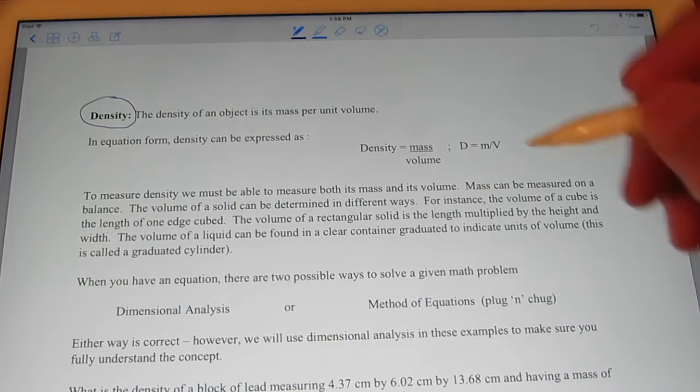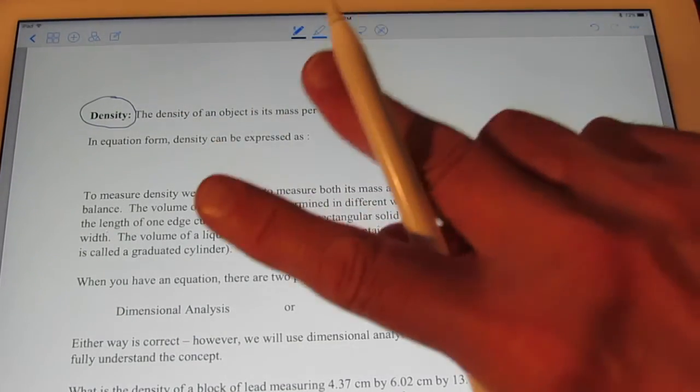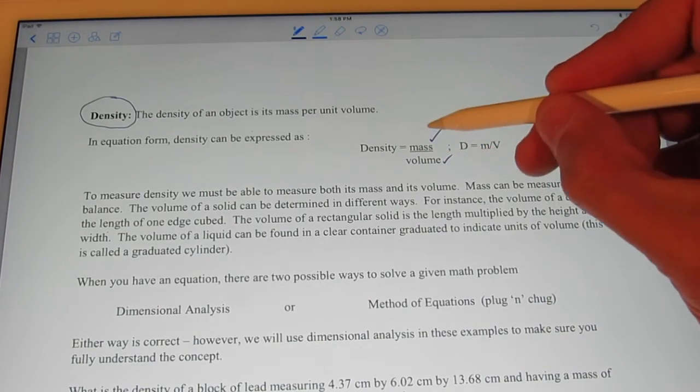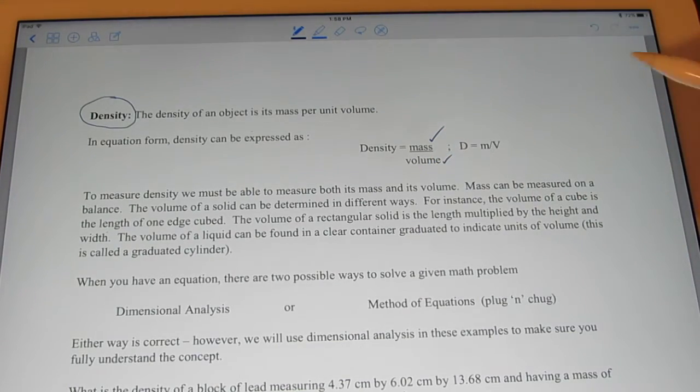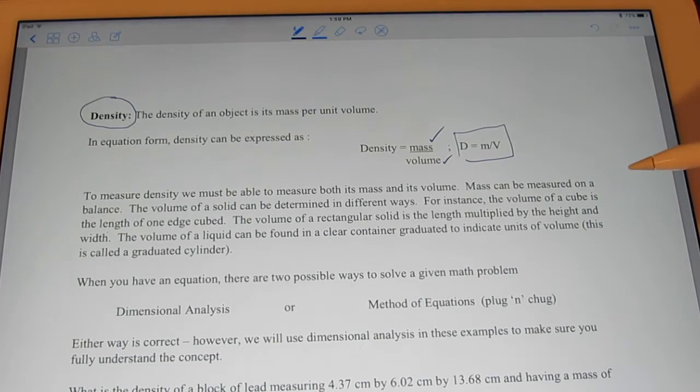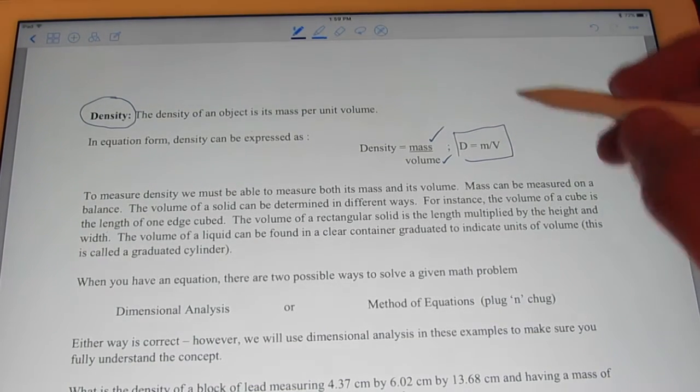Now, to find density, it's pretty easy. We need to know two things. The object's mass and the object's volume. If we know those two things, we divide the mass by the volume, and we have the density. It can also be written d equals m over v. Perhaps you've seen that equation in your junior high science class.